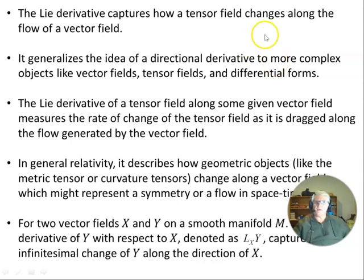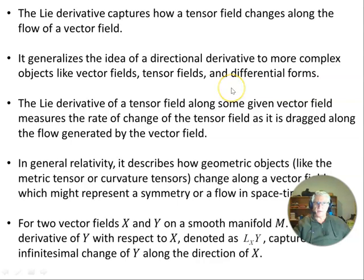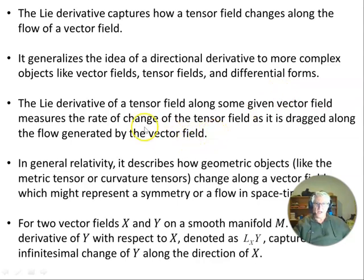The Lie derivative captures how a tensor field changes along the flow of a vector field. It generalizes the idea of a directional derivative to more complex objects like vector fields, tensor fields, and differential forms. The Lie derivative of a tensor field along some given vector field measures the rate of change of the tensor field as it is dragged along the flow generated by the vector field.